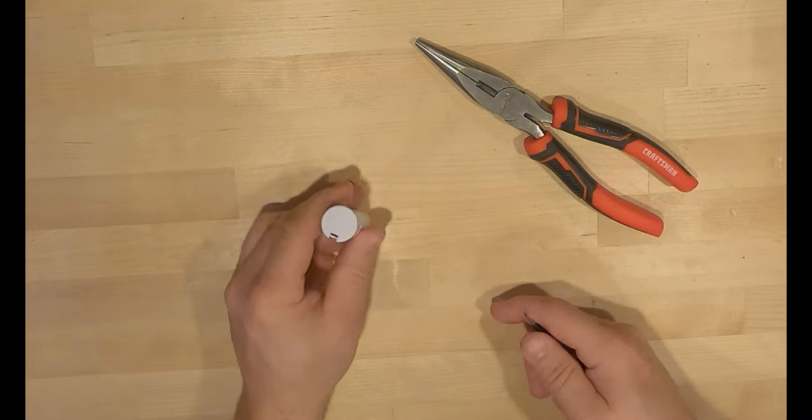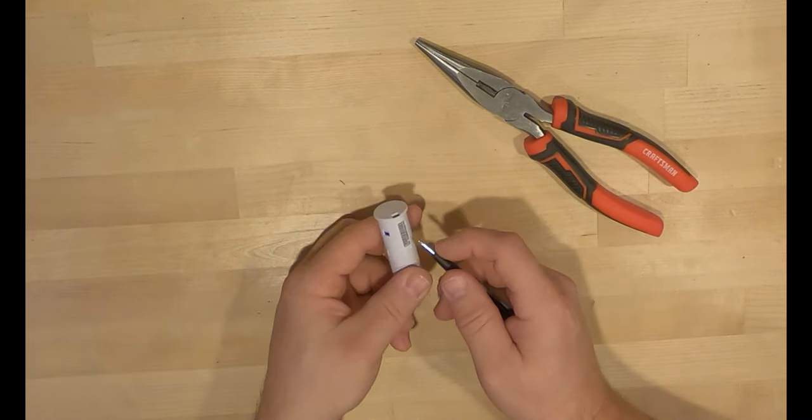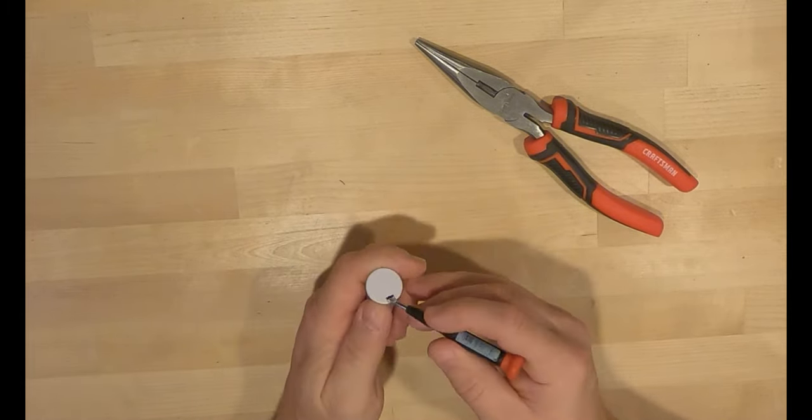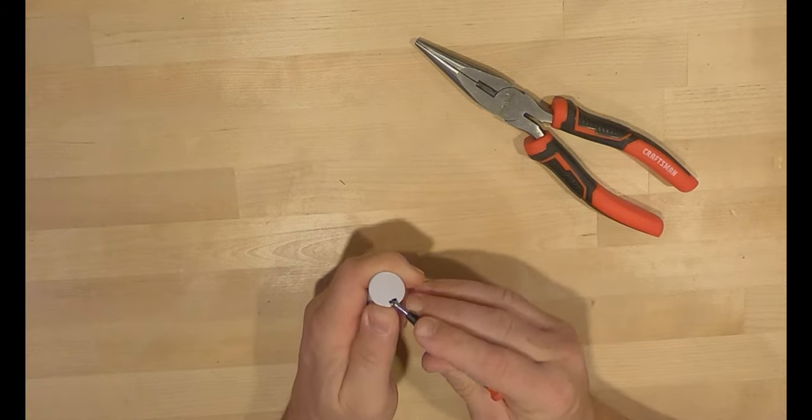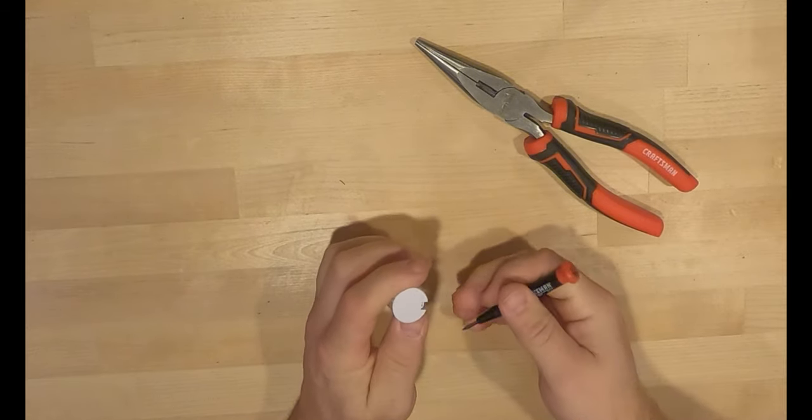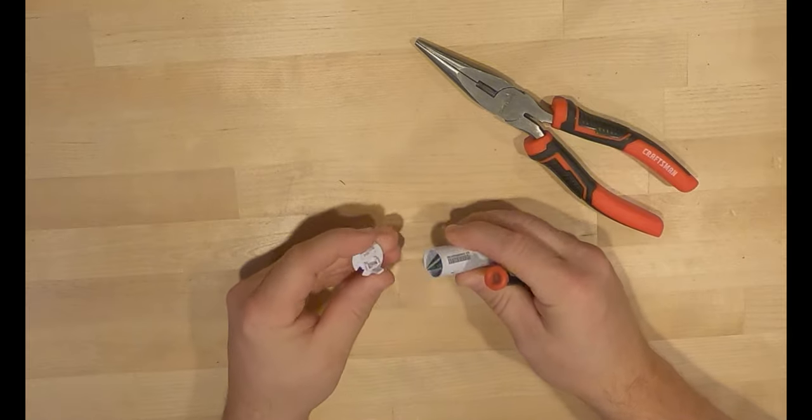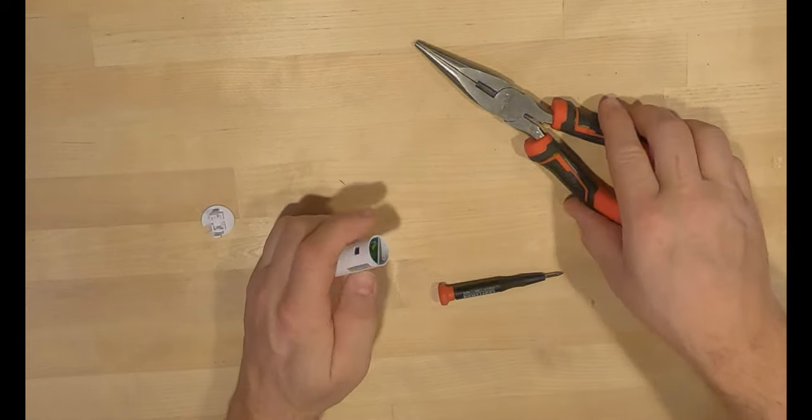So I'm just pointing out kind of where the plastic thing recesses in and it's got a little quarter inch slot. You're gonna want to pop this guy into and gently pop it up off the white sensor.